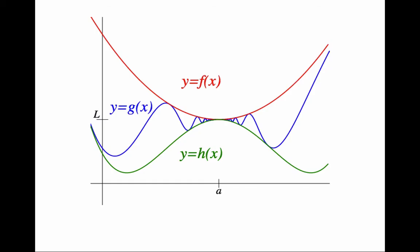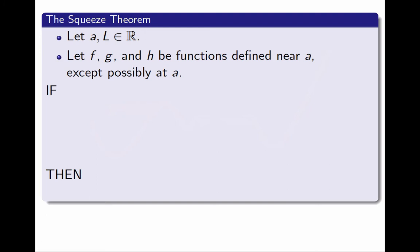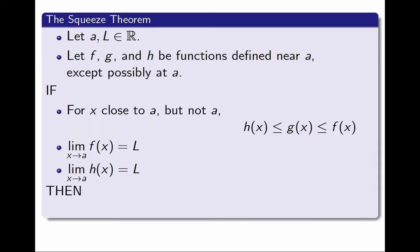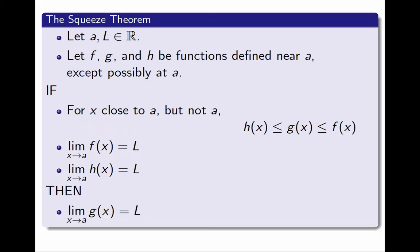This is how we wrote it as a formal statement. If the limit as x approaches a of f is L, and the same is true for the function h, and in addition the function g is between h and f, then the function g must also have the same limit.